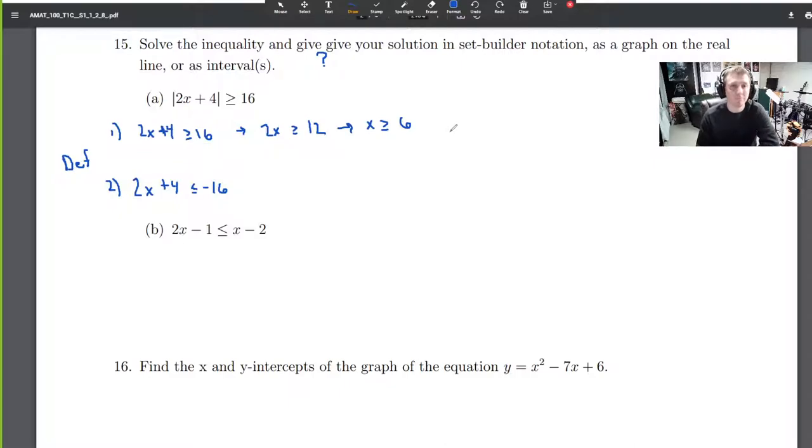So x is greater than or equal to 6. Anything greater than or equal to 6 will give us a true statement here. Or option two: 2x + 4 is less than or equal to -16. We're going to do the same thing - subtract four, divide by two. We don't need to flip the direction of the inequality because we're not dividing by a negative. x is less than or equal to -10.